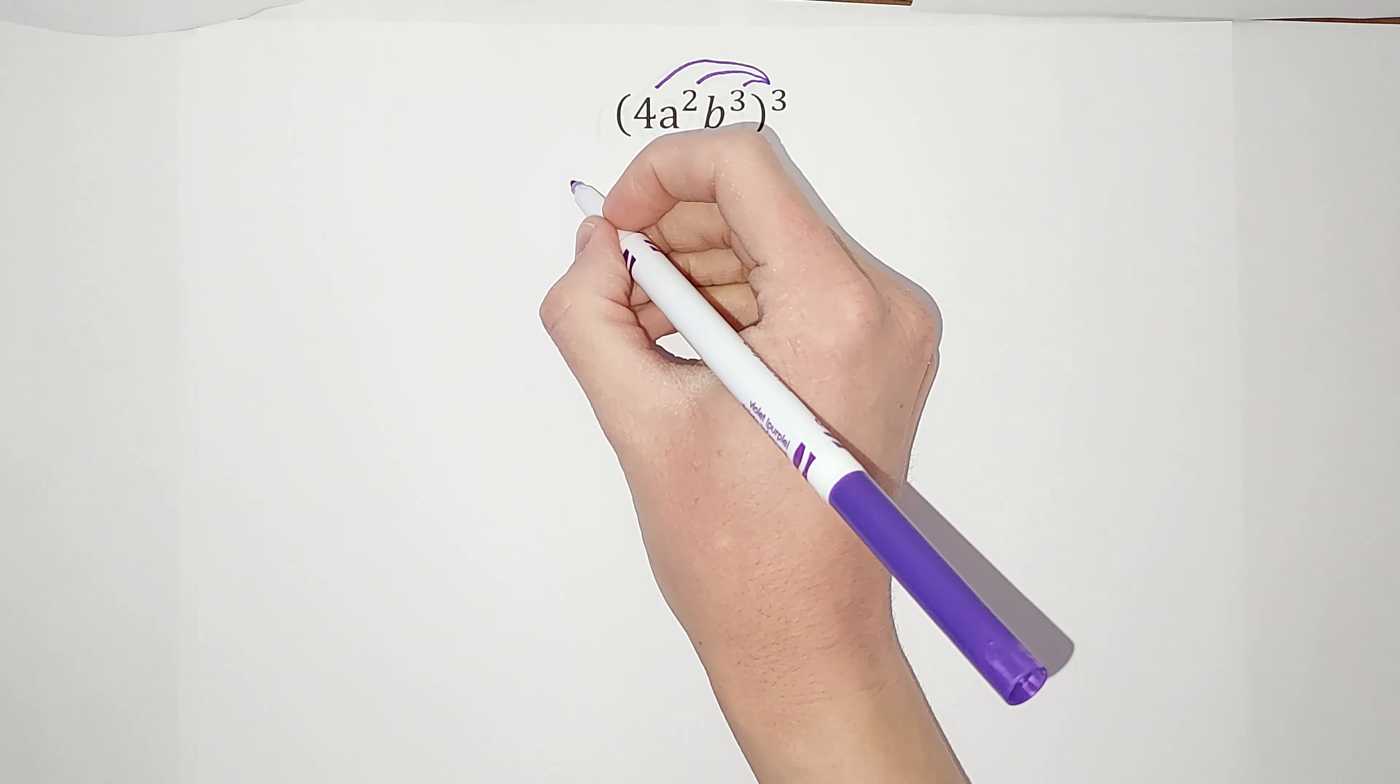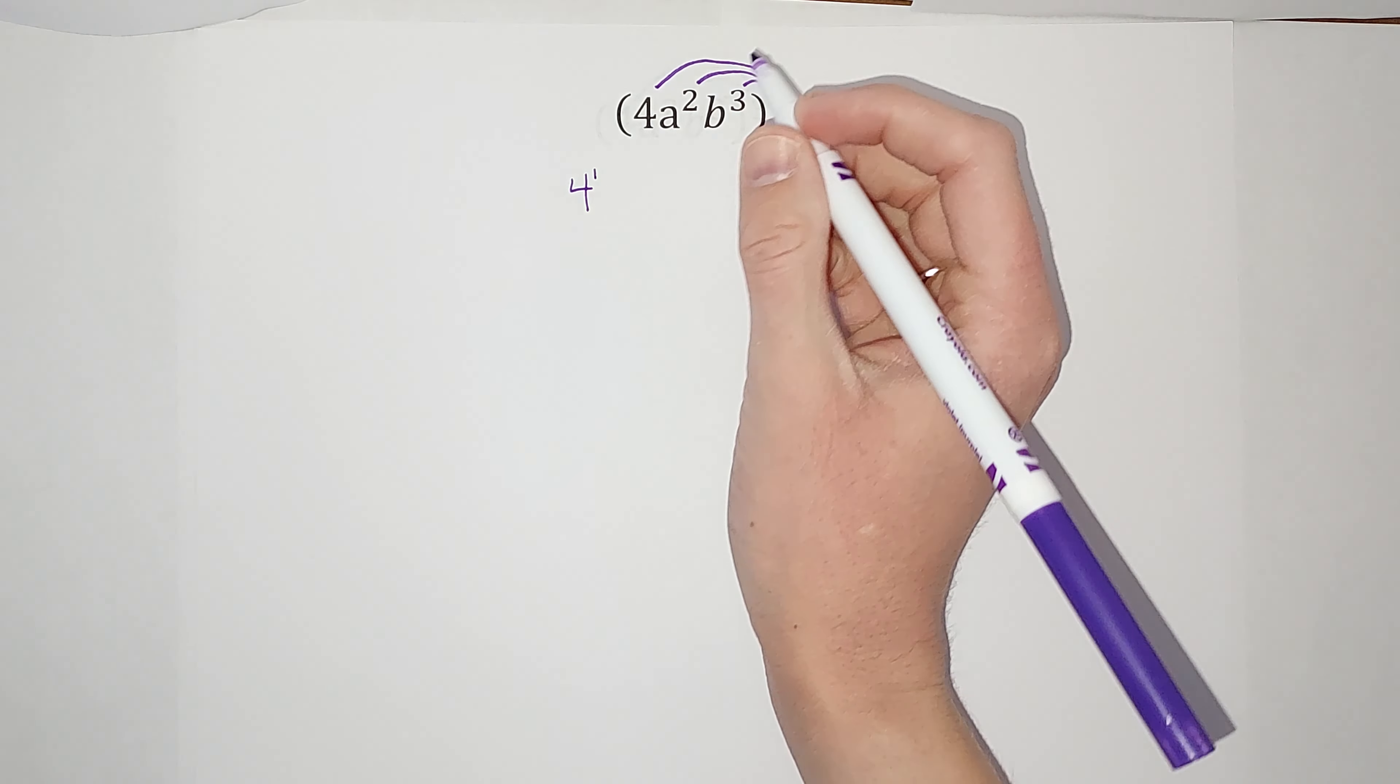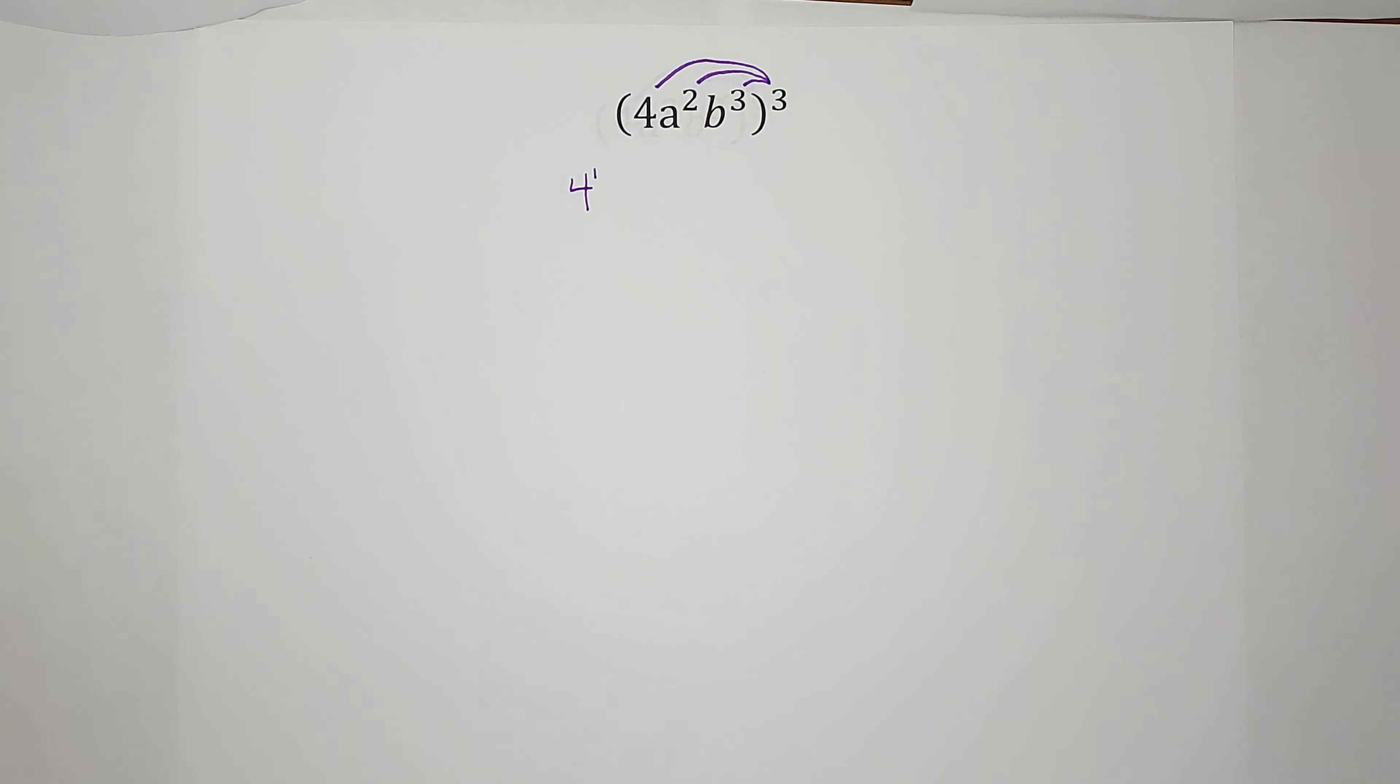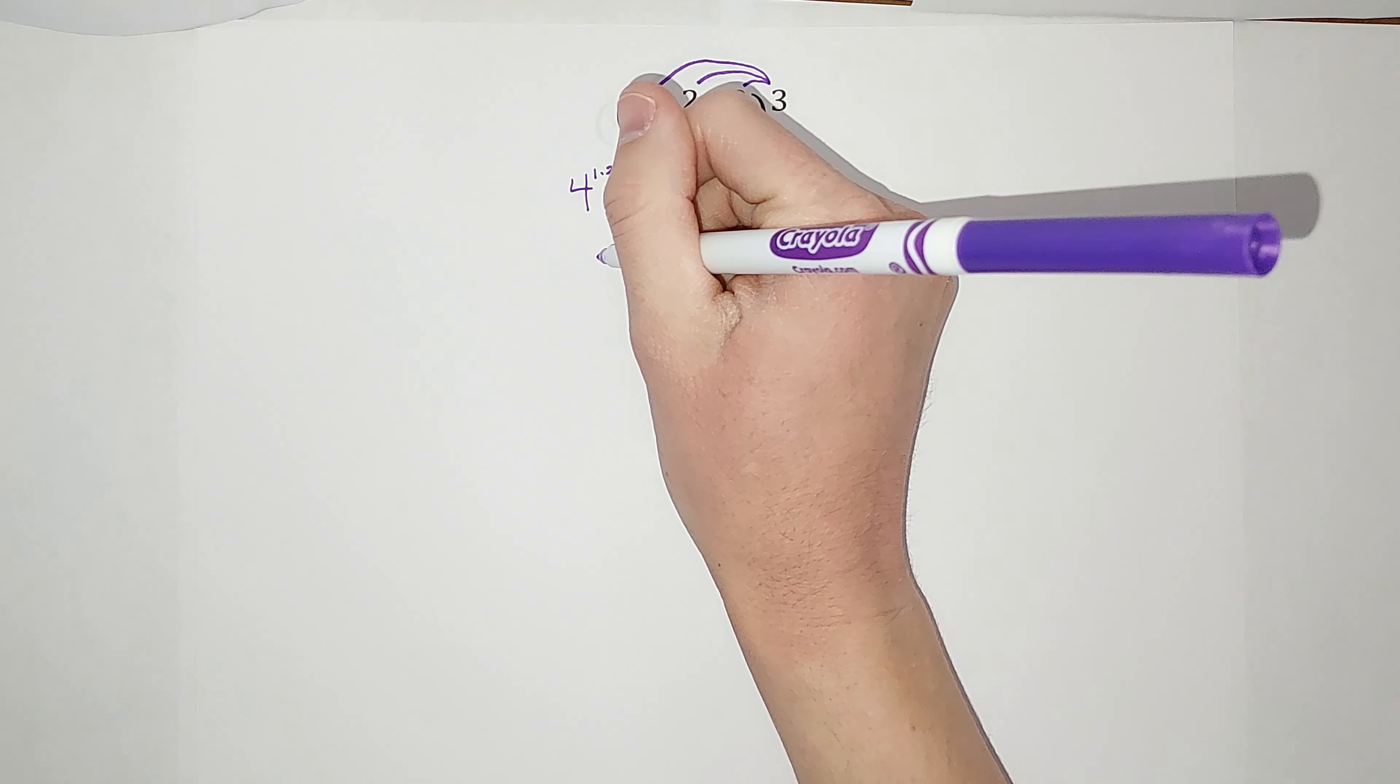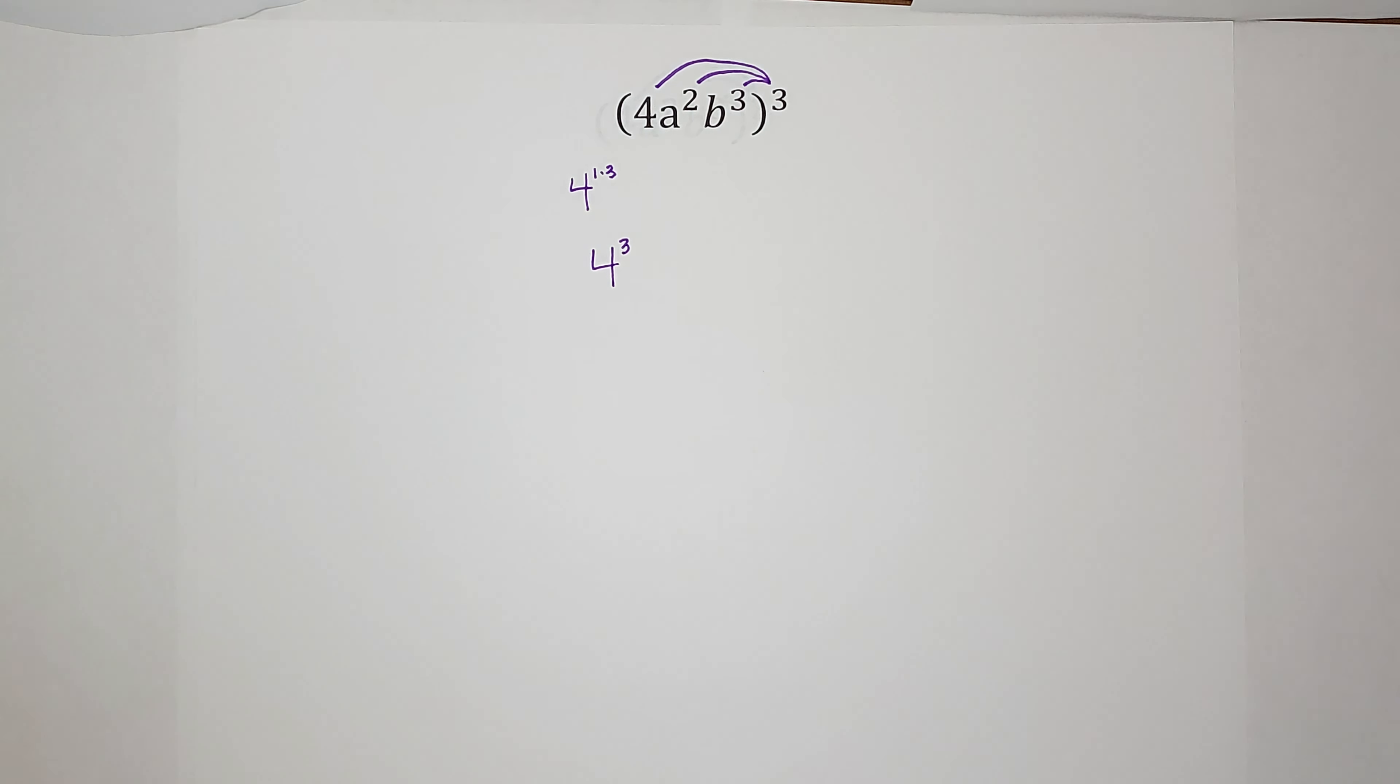So this could look like four to the first. Then we're distributing that to the third in. So it's going to look like one times three. One times three gives me three, so we're left with four to the third power.